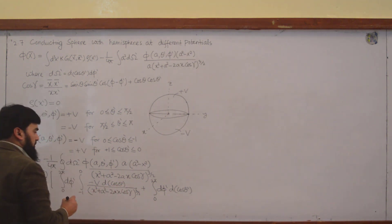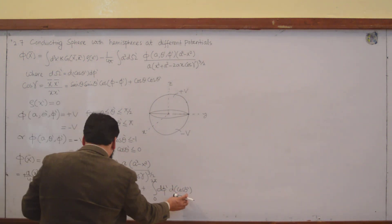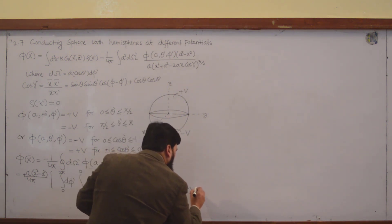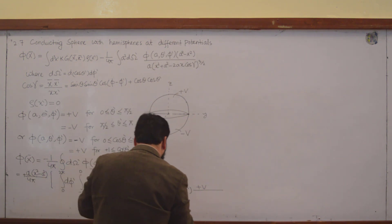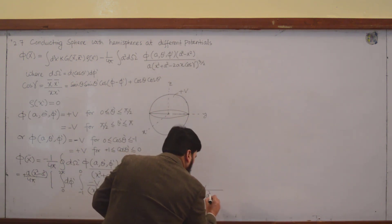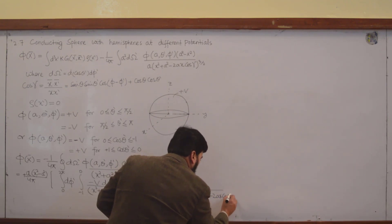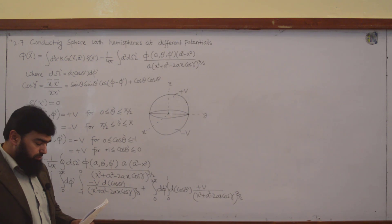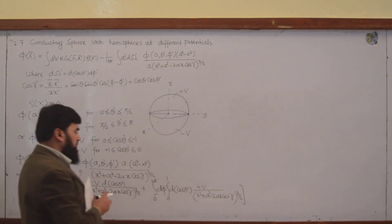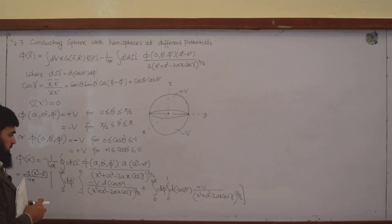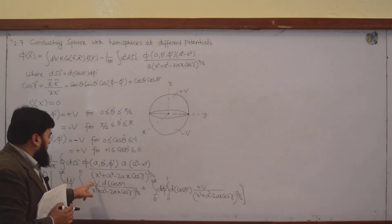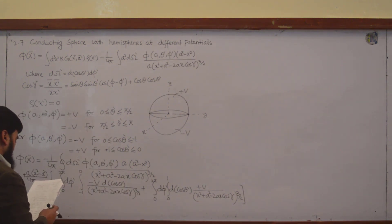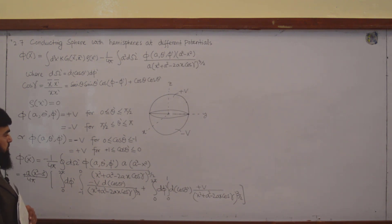dφ' and d(cos θ'), and this one is from 0 to 1. From 0 to 1, the potential is +V, divided by x² + a² − 2ax·cos(γ) to the 3/2. I have to enclose the −V in its limits and the +V in its limits, so now my integration is ready.